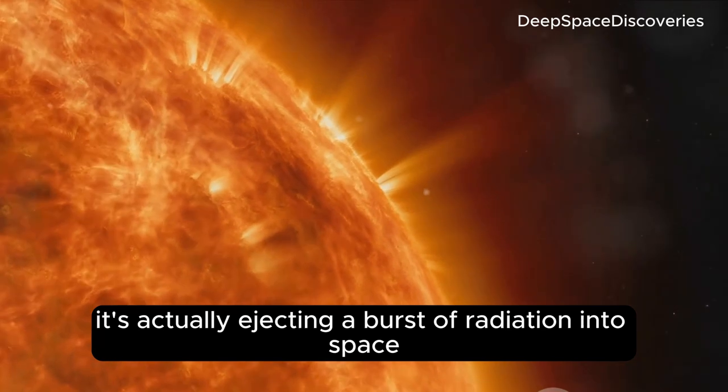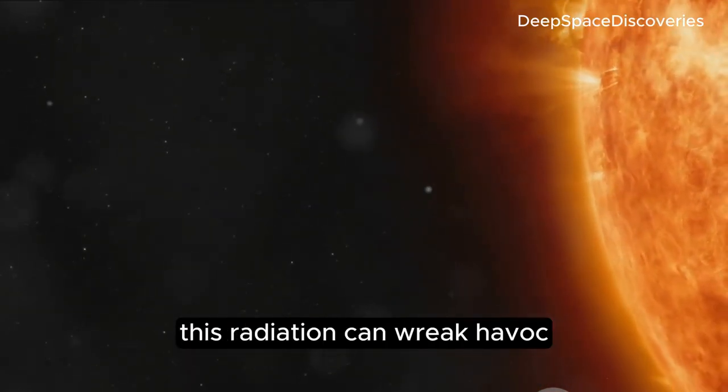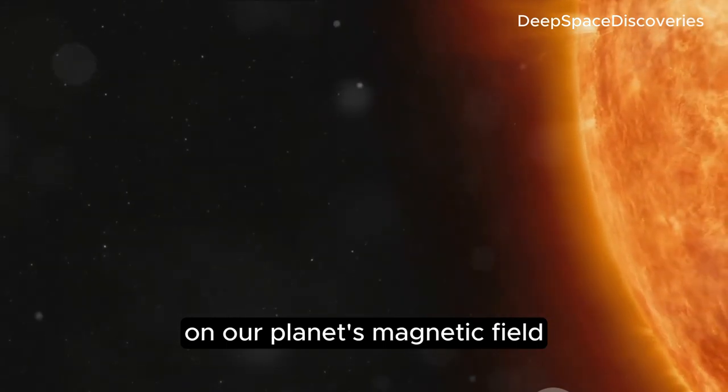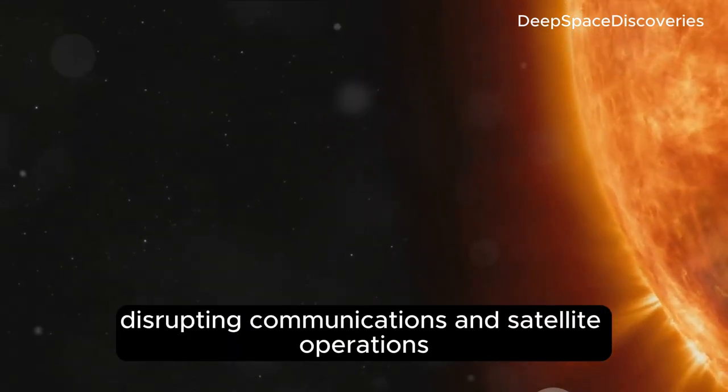When the Sun spits out a flare, it's actually ejecting a burst of radiation into space. If Earth is in the line of fire, this radiation can wreak havoc on our planet's magnetic field, potentially disrupting communications and satellite operations.